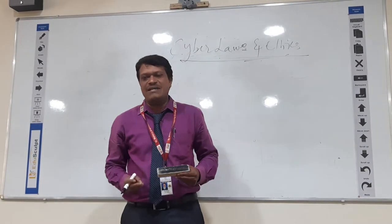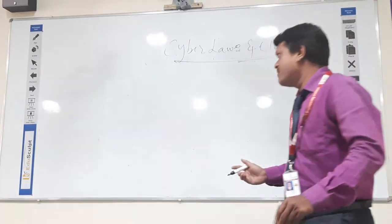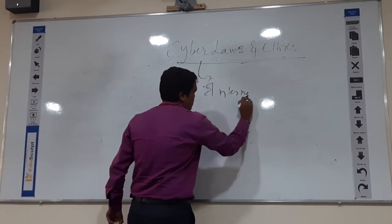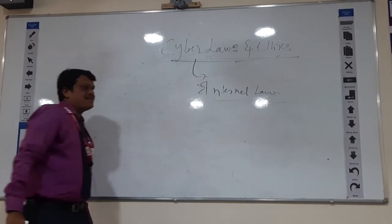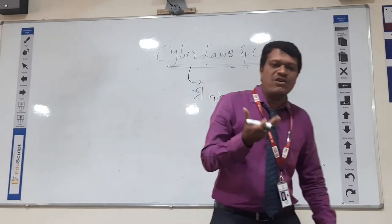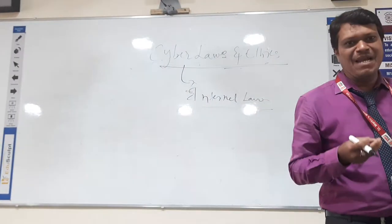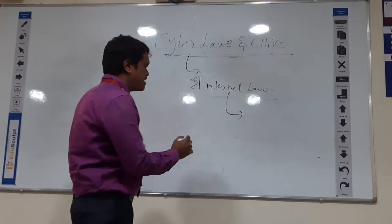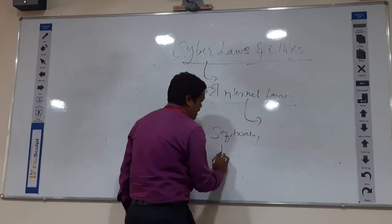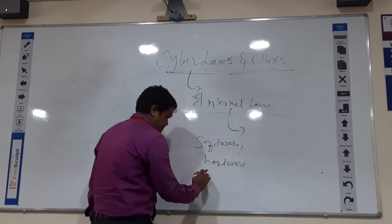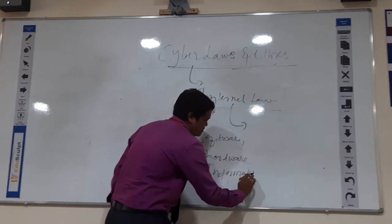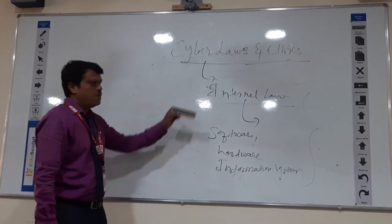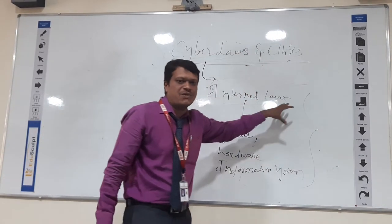So what do you mean by cyber law? Generally, cyber law is nothing but what we can say is an internet law. In this internet law, we have a relationship between technology and also electronic elements. These electronic elements consist of different types of things: software, hardware, and information systems. These are the things that come under electronic elements. Whatever cyber crimes have occurred, they can only occur to these elements.